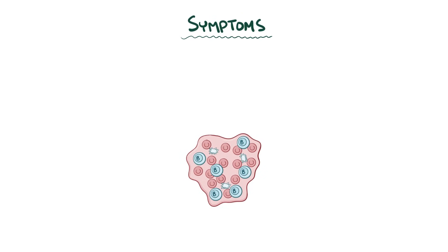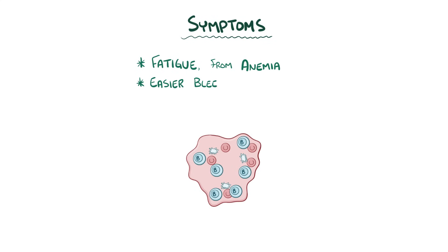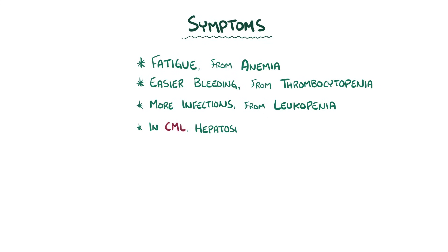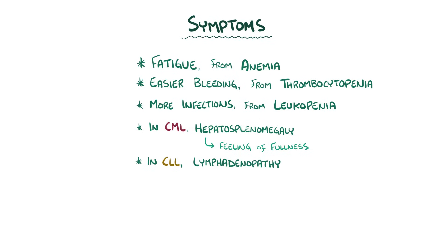Symptoms of both CML and CLL include fatigue because of the anemia, easier bleeding because of the thrombocytopenia, and more frequent infection because of the leukopenia. In CML, the hepatosplenomegaly often causes a feeling of abdominal fullness, while the lymphadenopathy of CLL often causes mild but localized pain in the lymph nodes.